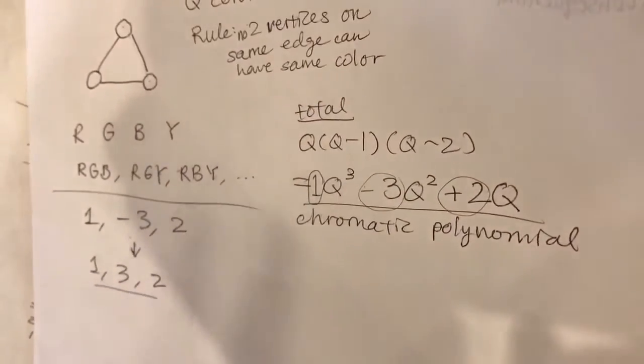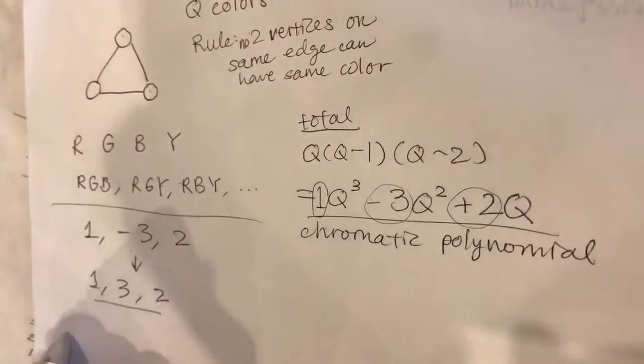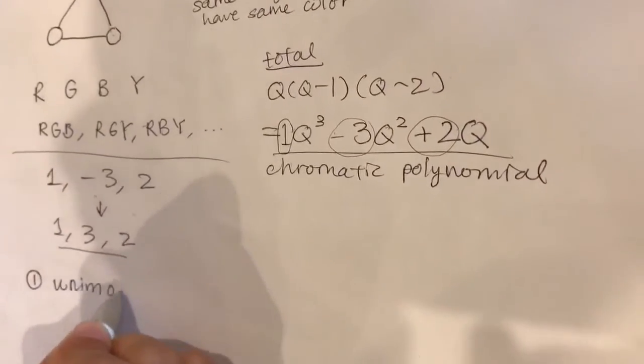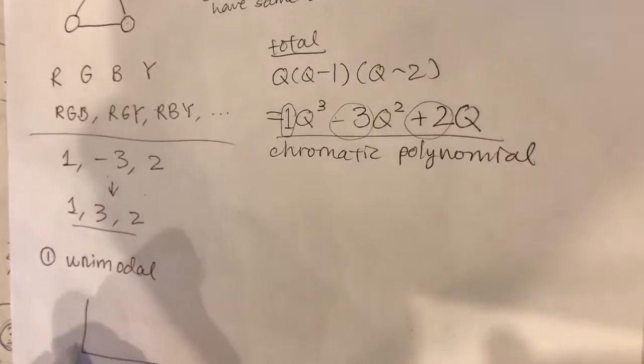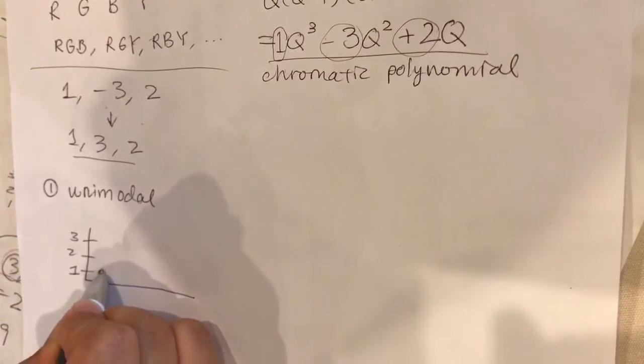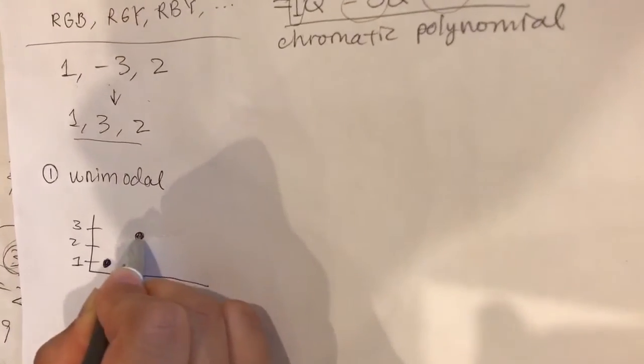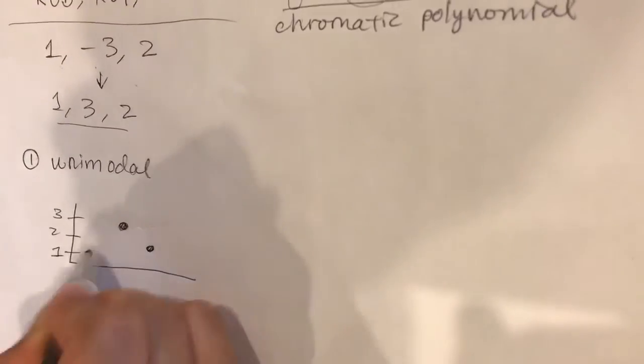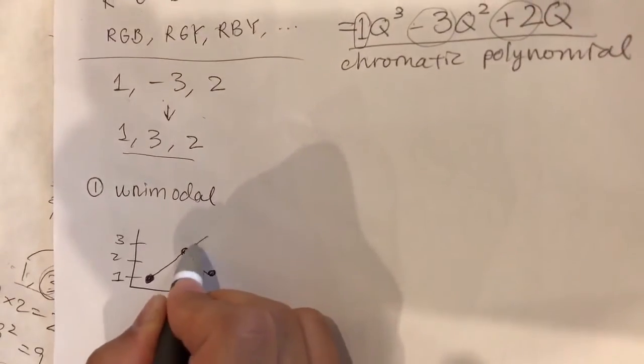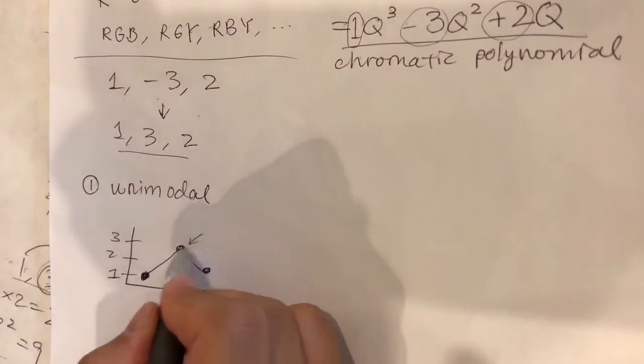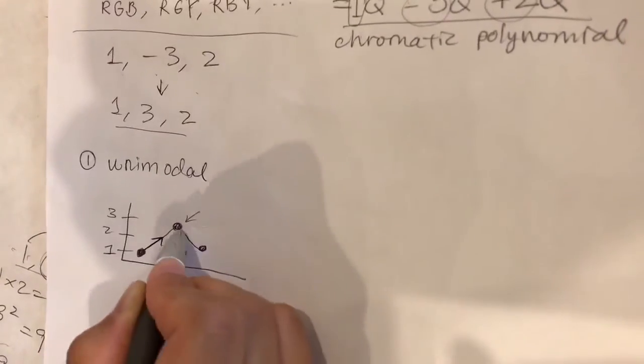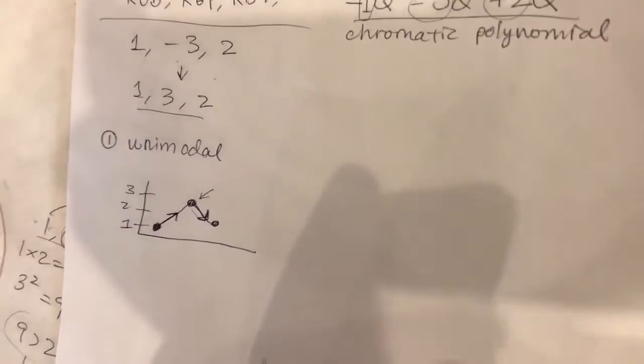Now 1, 3, and 2 have two very special properties. The first special property is that it is unimodal, which means if we have this graph, we start off with 1 on the left, 3 in the middle, and 2 on the right. When we draw this out, we can see from the graph that it peaks only once at 3, and it peaks in the middle. Before it peaks it's always going up, and after it peaks it's always going down.